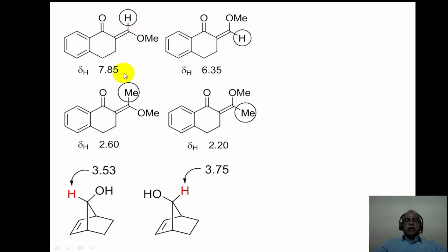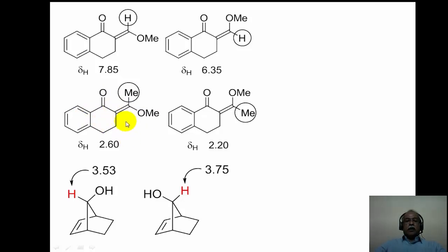The same effect is seen with a methyl-substituted derivative — the 2-acetyl tetralone enol ether. The methyl group cis to the carbonyl functional group comes at a higher delta value, while the methyl trans to the carbonyl comes at a lower delta value.